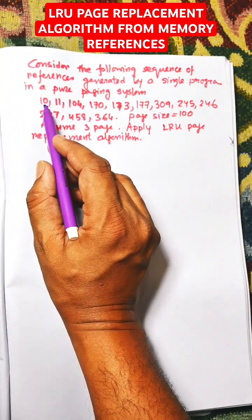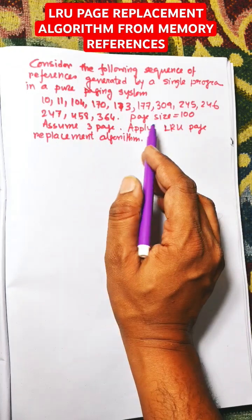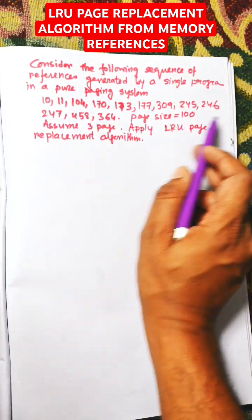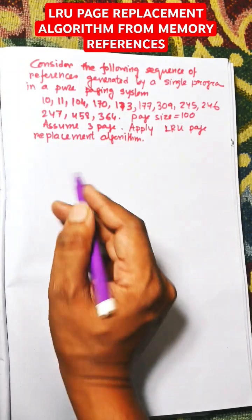Here memory references is given and we need to apply LRU page replacement algorithm. These are not page numbers, they are known as memory addresses. Now we need to find the page number.